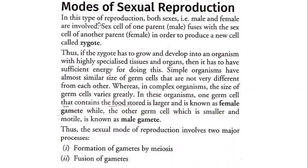In sexual reproduction, both sexes — male and female — are involved. The sex cell of one parent, male, fuses with the sex cell of another parent, that is female, in order to produce a new cell called zygote.